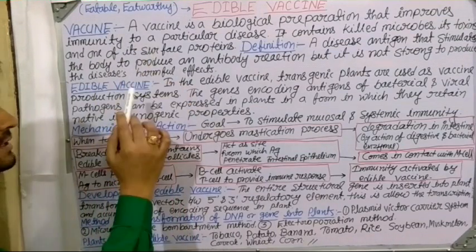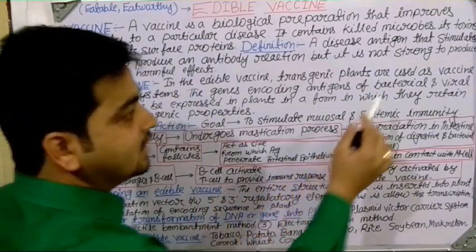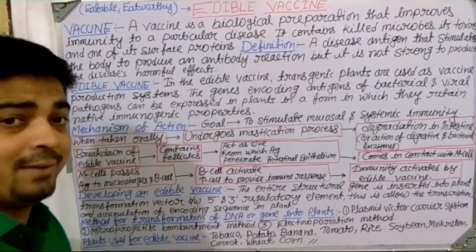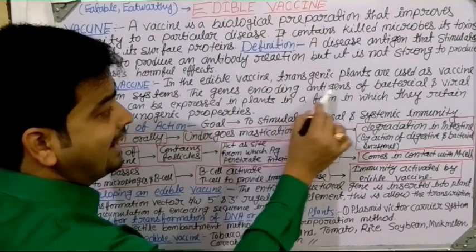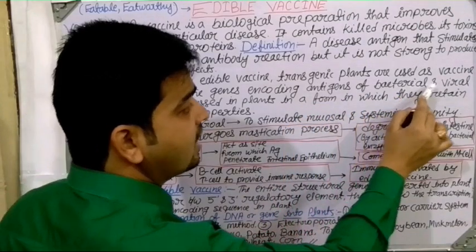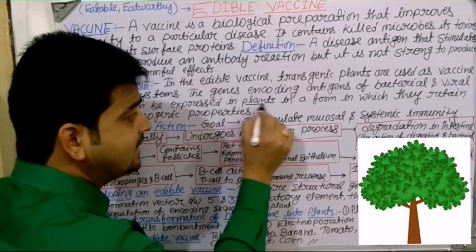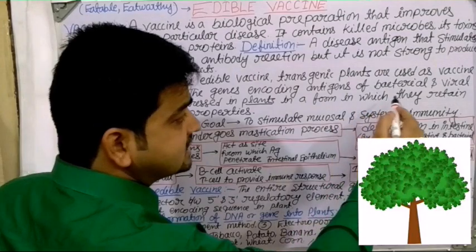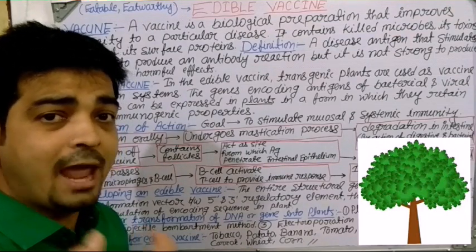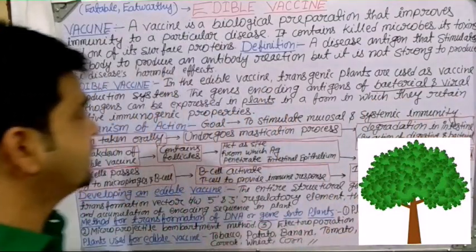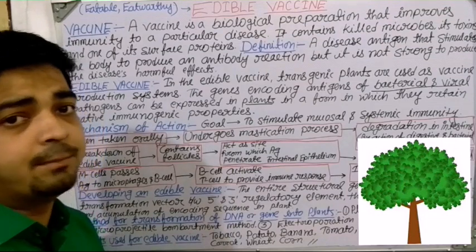In edible vaccines, transgenic plants are used. We use the plant as a vaccine production system — the plant is the host body where the vaccines are produced. The genes encoding antigens of bacterial and viral pathogens can be expressed in plants in a form which retains their native immunogenic properties. The plant is then consumed by the person.